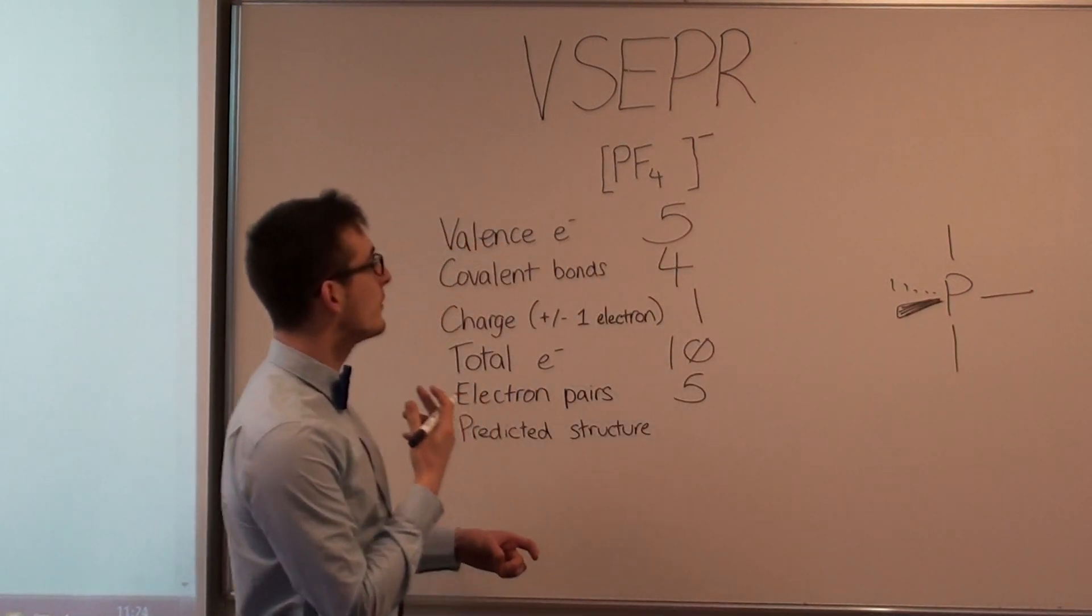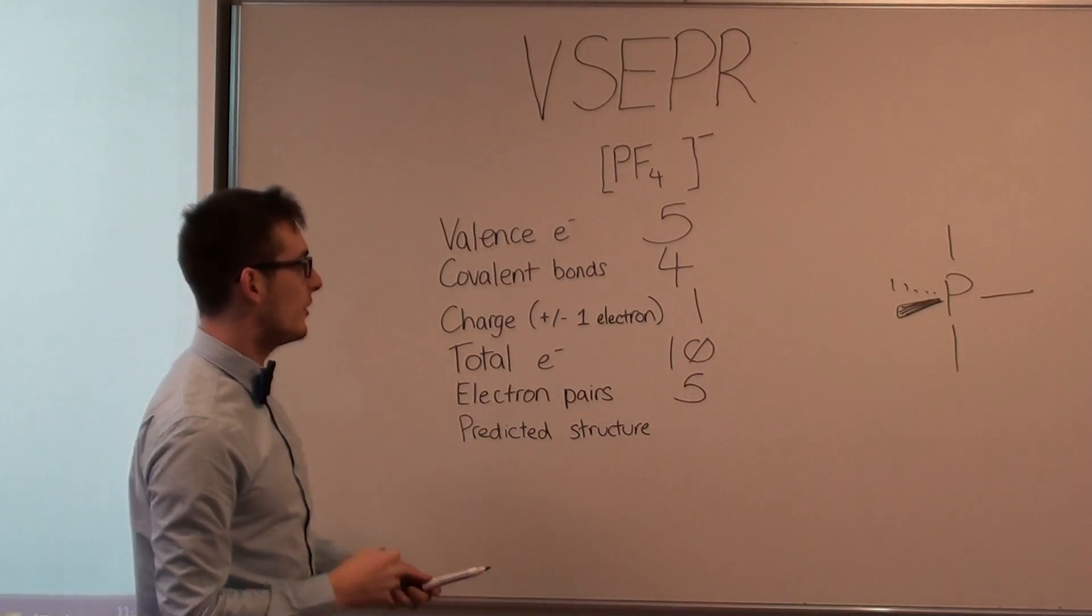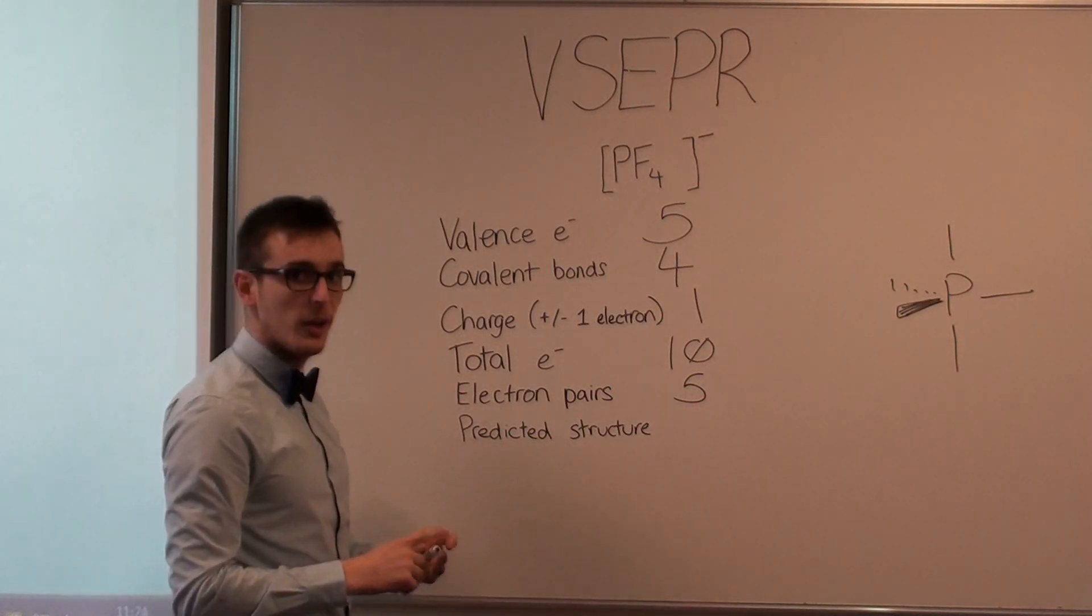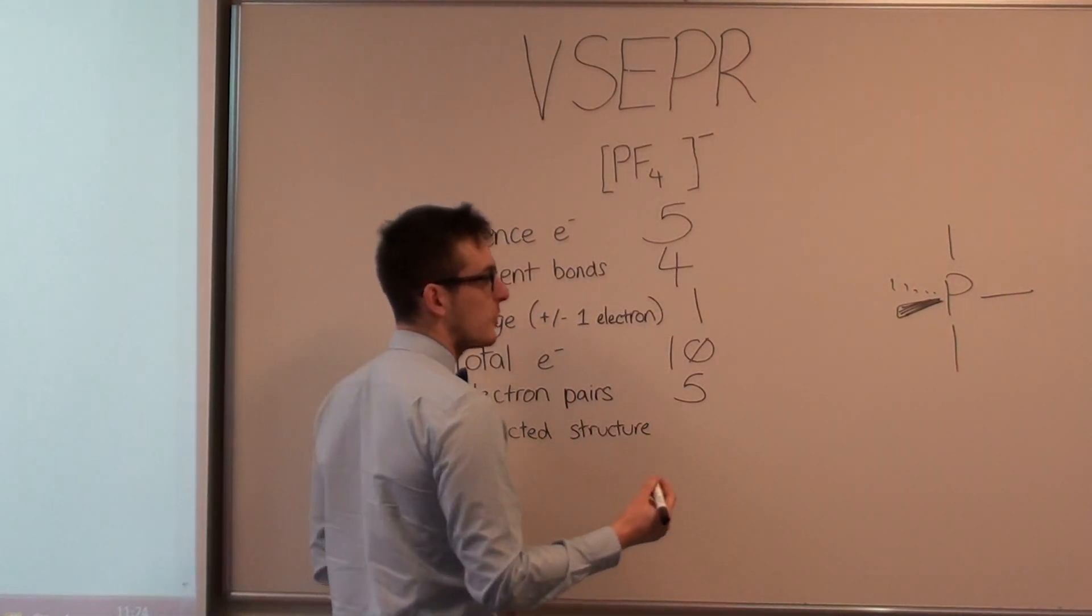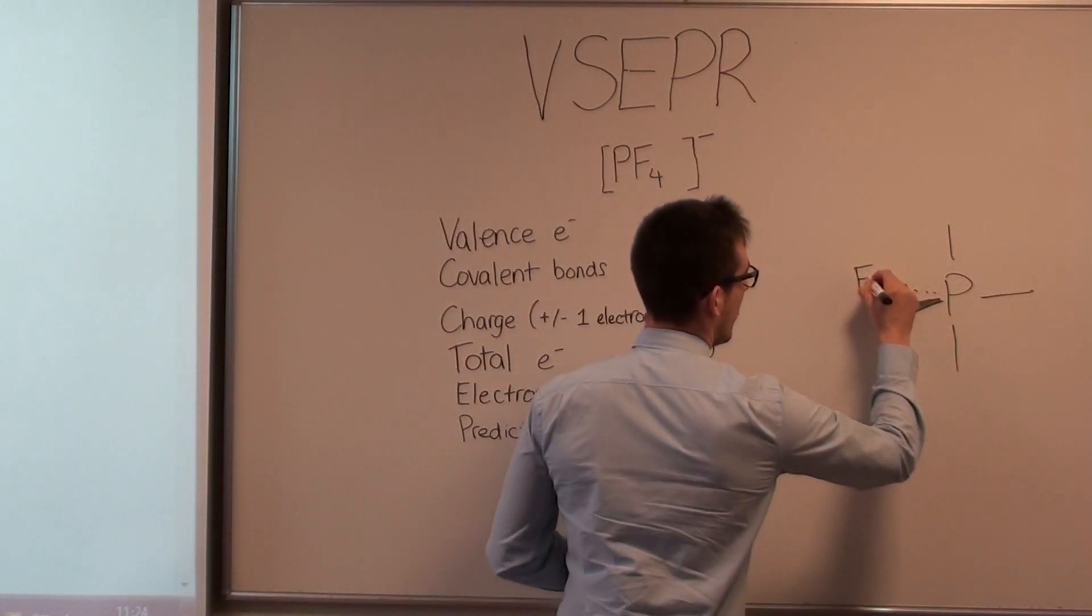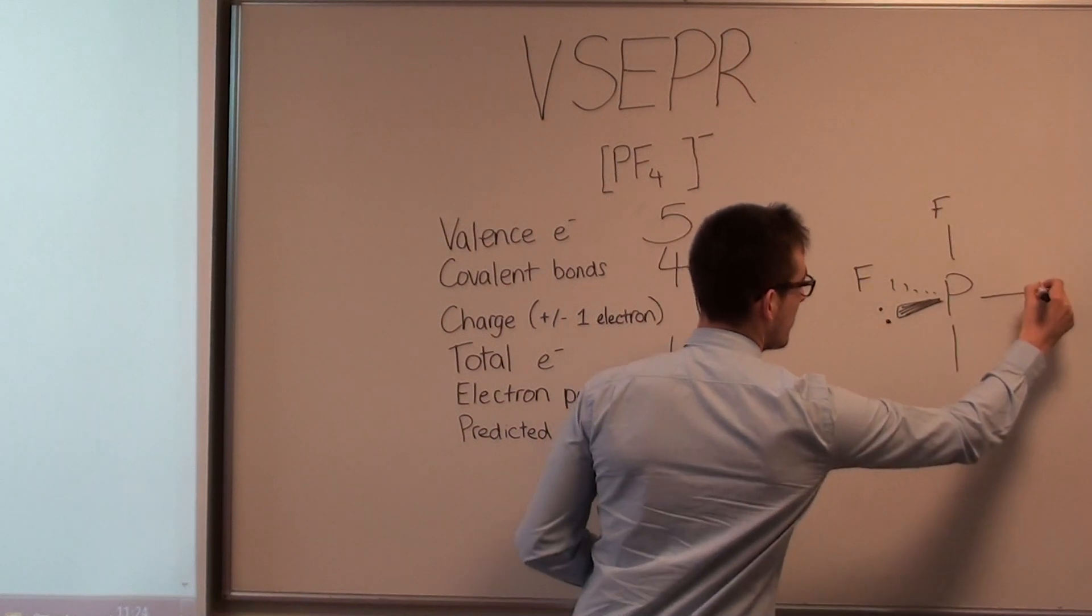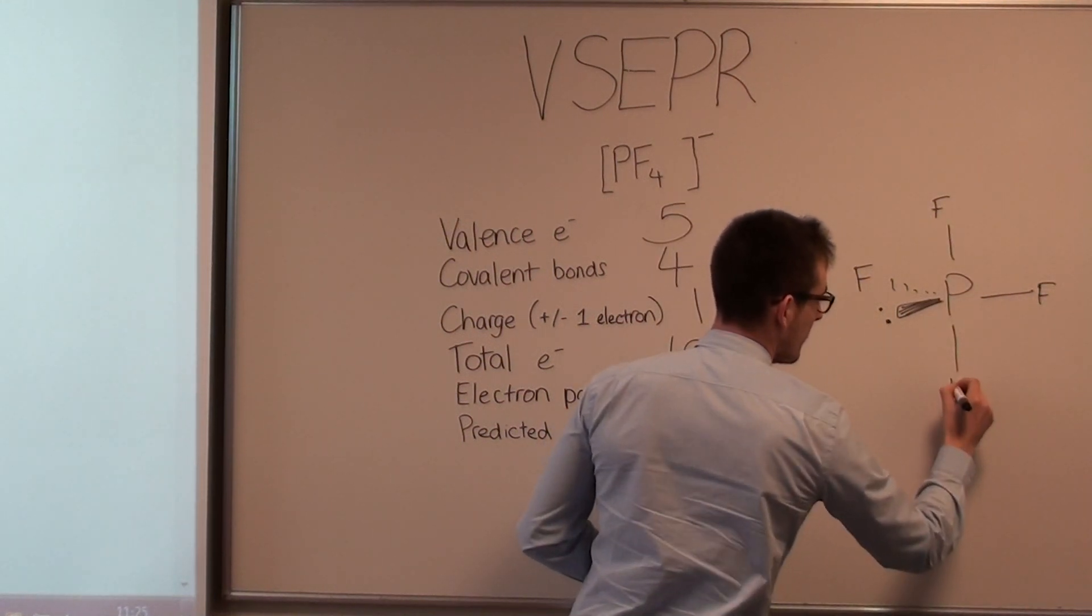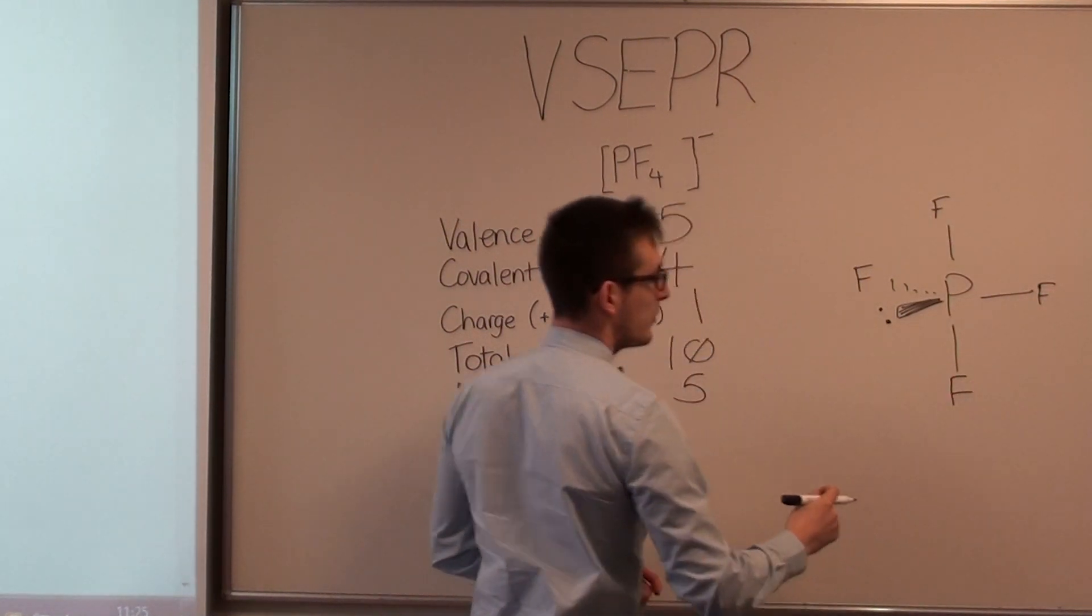We've got four fluorine ligands and one lone pair of electrons to go on it. And we know that lone pairs of electrons always go equatorial. So, put them there, and the fluorines in every other possible place. And that is your predicted shape.